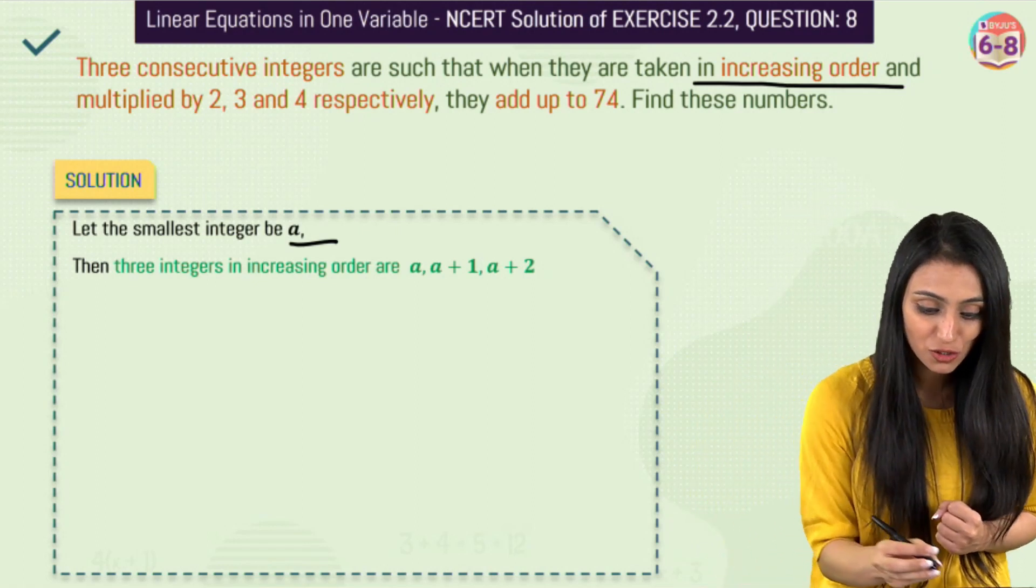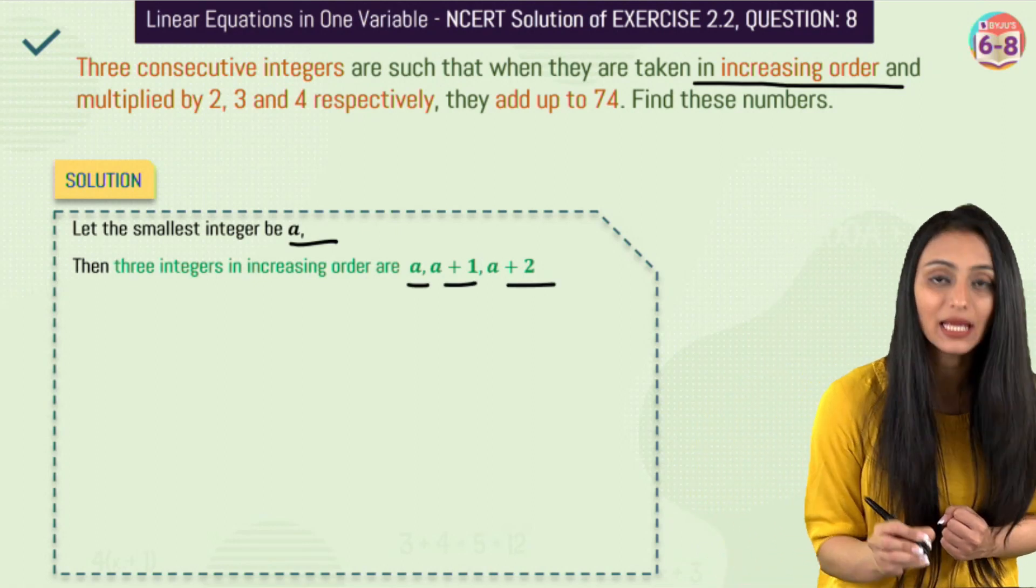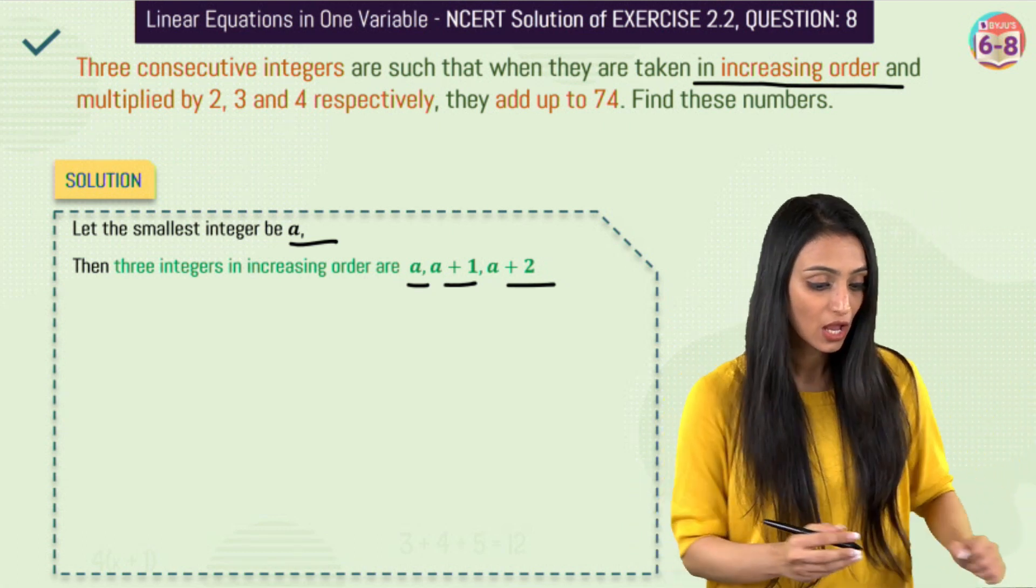They are in increasing order, so they are going to be a, a plus 1, a plus 2. Consecutive means that comes one after the other. Alright.